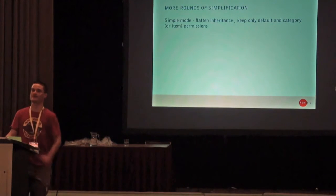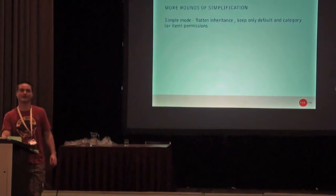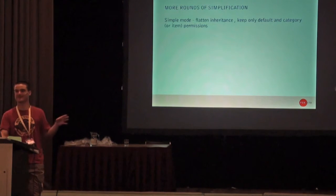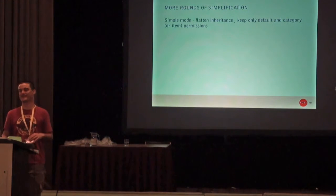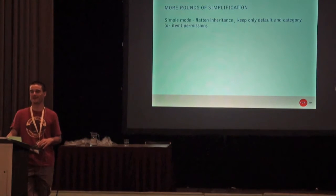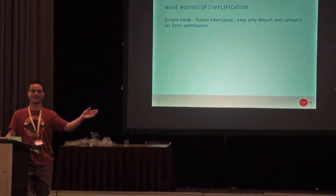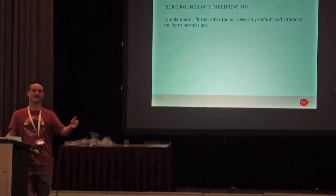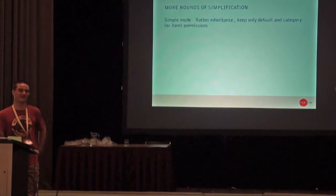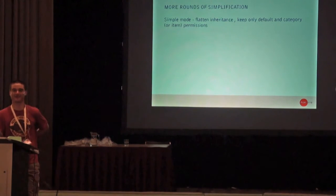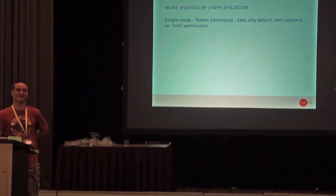Longer term future: more rounds of simplification. What we've discussed is creating either another version or, better, a simple mode that would have flattened inheritance. For simple cases where you don't need all this inheritance, it would just have one default value for content items, and you could change it at the category level or the item level. The category level would suffice for simple cases, and the rest of items would just inherit the default value. You normally don't need five levels of inheritance.